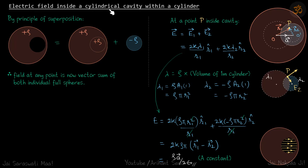Electric field inside a cylindrical cavity within a cylinder. We are given a cylinder and this is a cross section of that. It's a long cylinder which has a given charge density rho and we have a cylindrical cavity inside the cylinder.